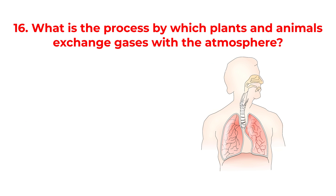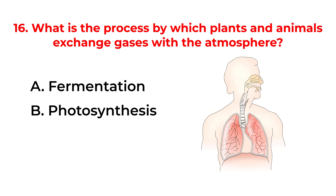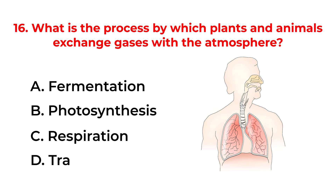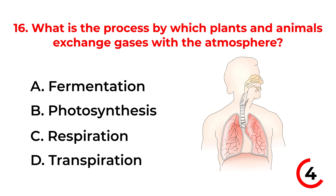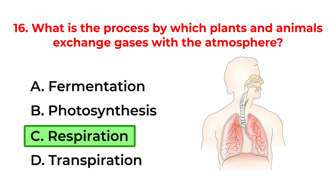What is the process by which plants and animals exchange gases with the atmosphere? A. Fermentation. B. Photosynthesis. C. Respiration. D. Transpiration. The correct answer is option C: Respiration.